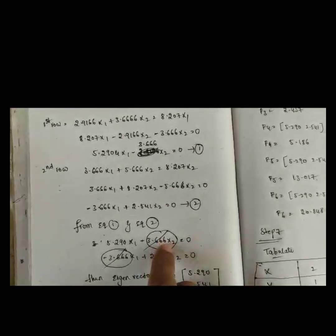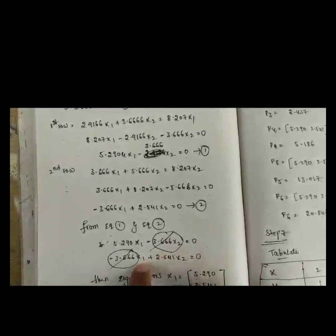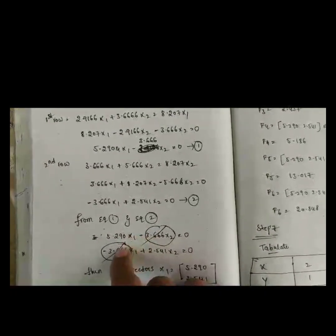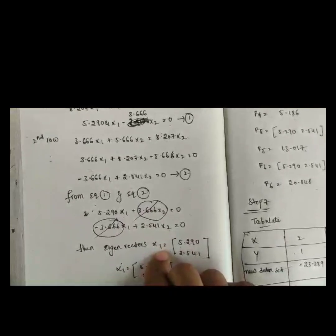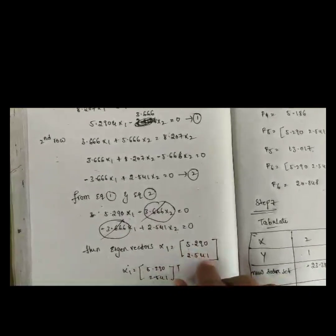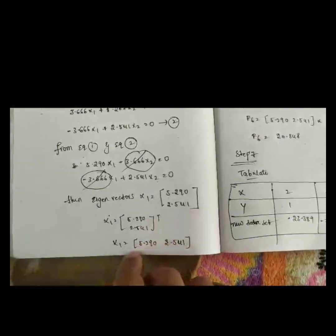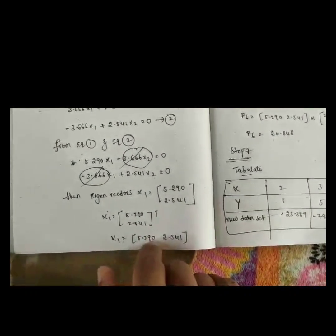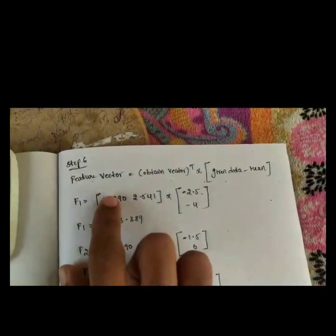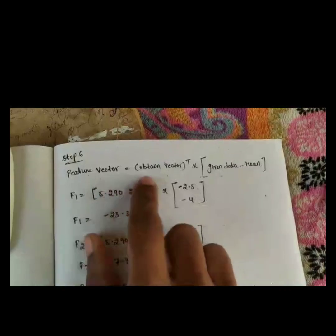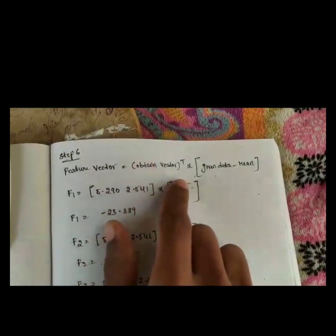From equations 1 and 2, we observe that the coefficient of x₂ in equation 1 and the coefficient of x₁ in equation 2 are proportional, so we can directly obtain the eigenvector: x equals [3.416, 5.2904] transposed, or equivalently [3.416, 5.290].